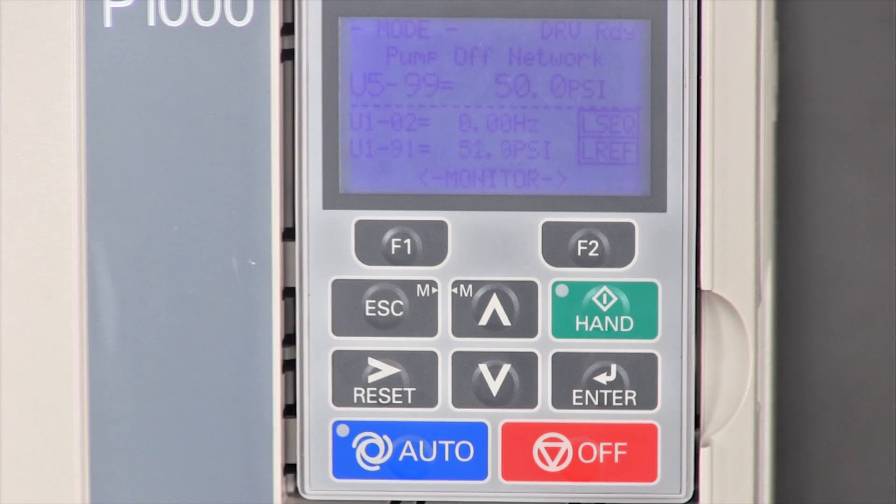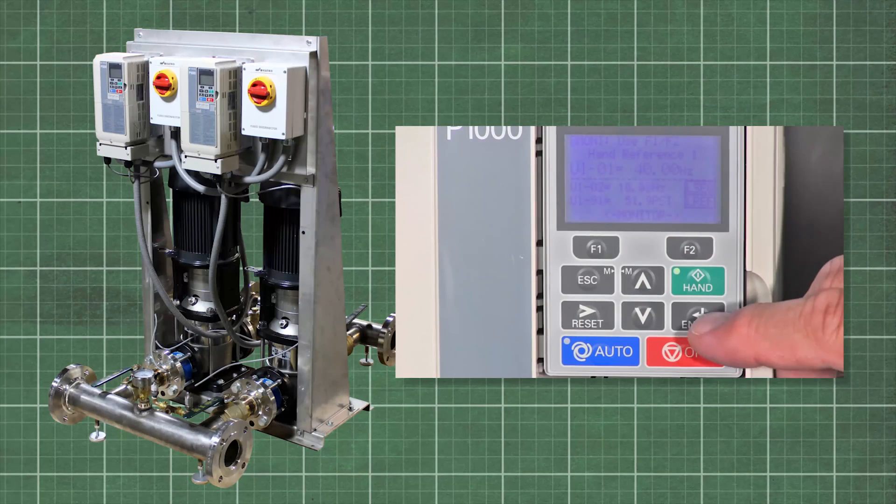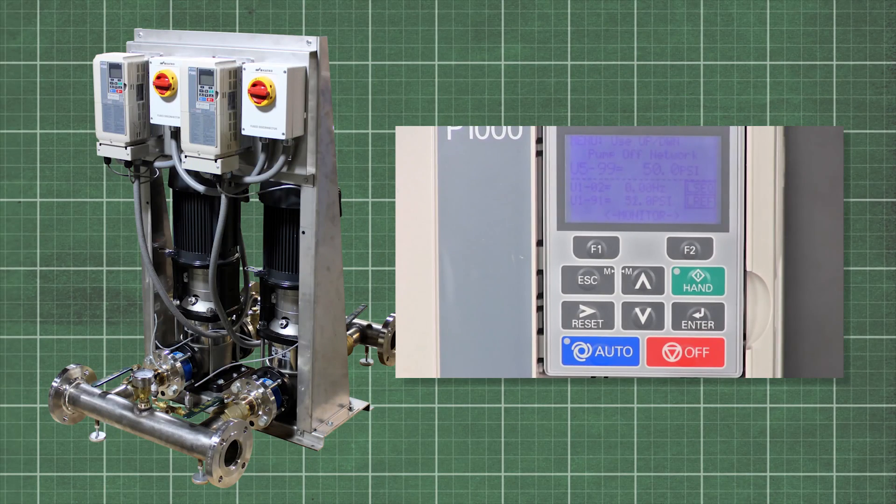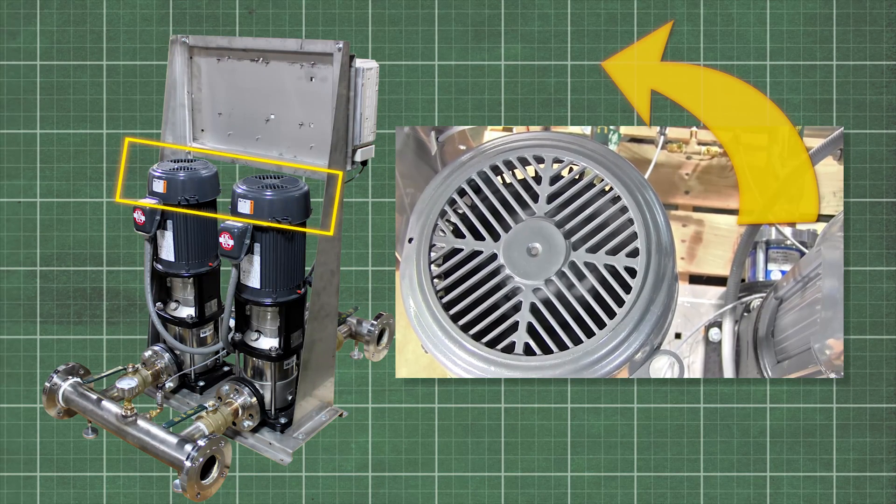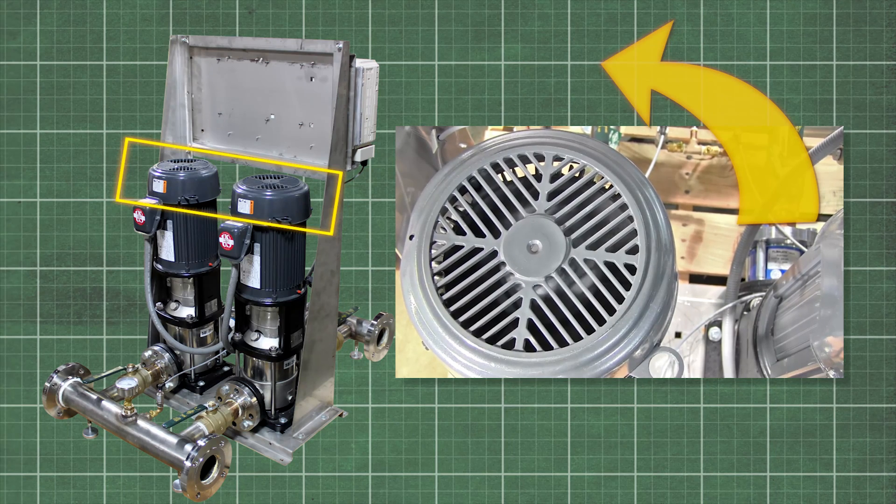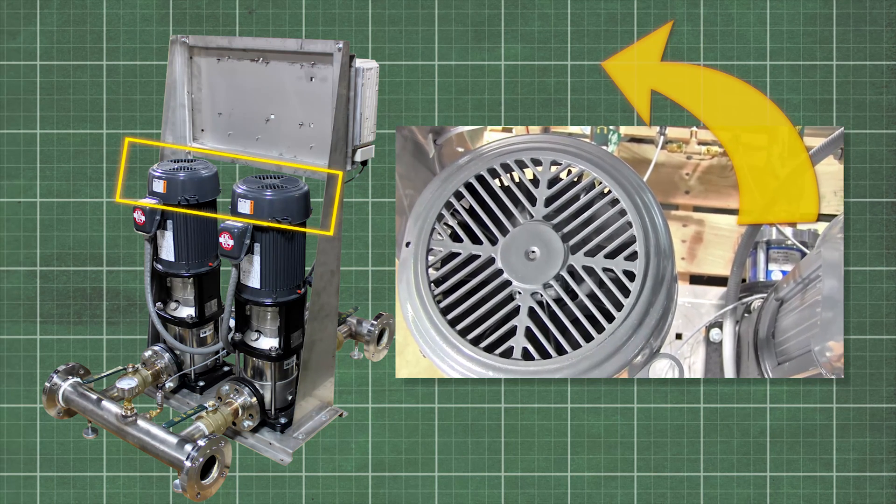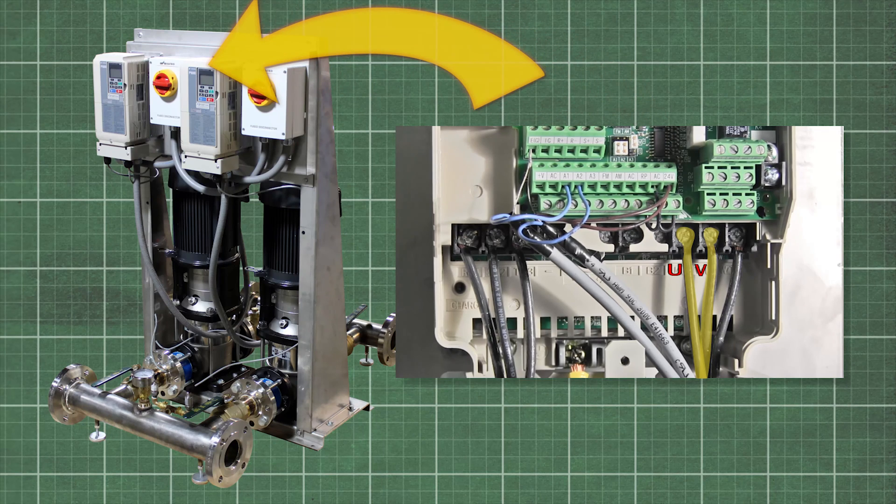Before we run into the auto mode, let's double check the motor rotation. Press the hand button on and then off. Look at the end of the motor. The motor fan should be turning in the direction of the arrow on the pump. For this pump, it should be turning counter clockwise. If not, switch the U and V wire inside the drive on the UVW terminals.